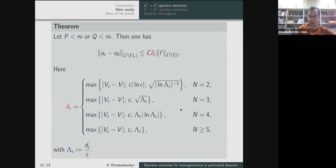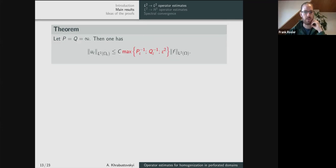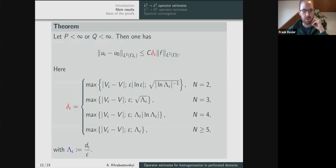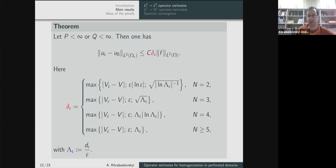The speed of convergence depends essentially on the dimension. What happens when both p and q are infinite?